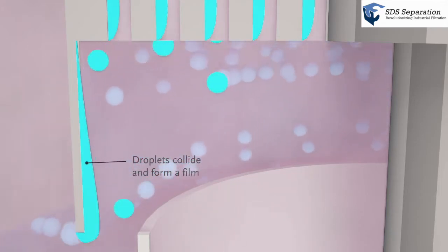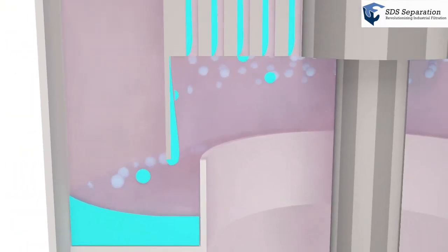Again, a film is formed, which breaks up into large droplets, which are centrifugated to the second liquid outlet.